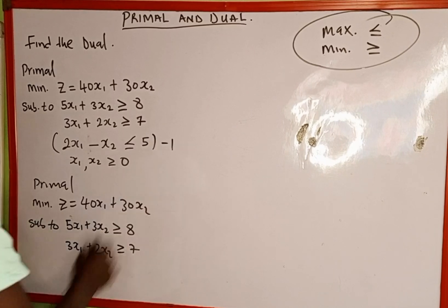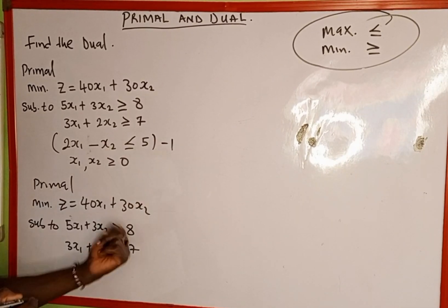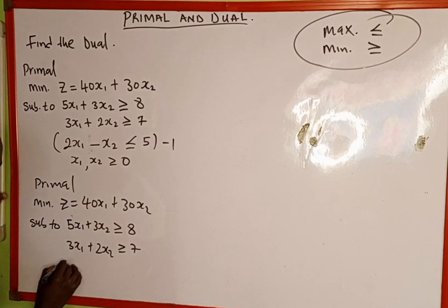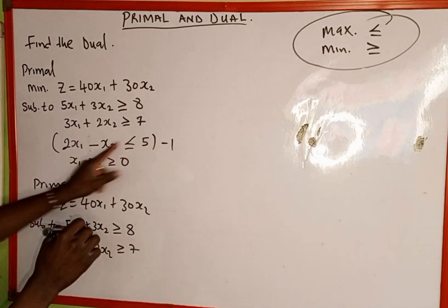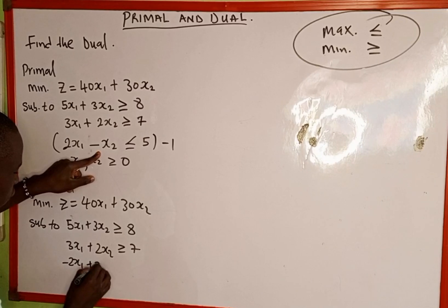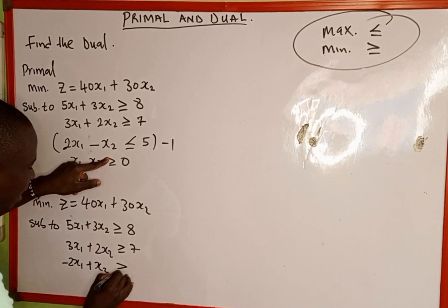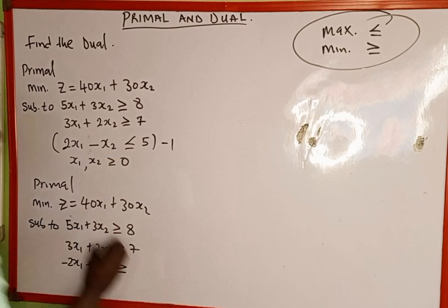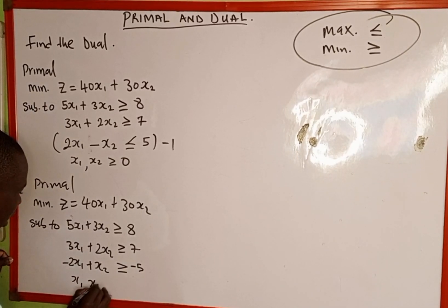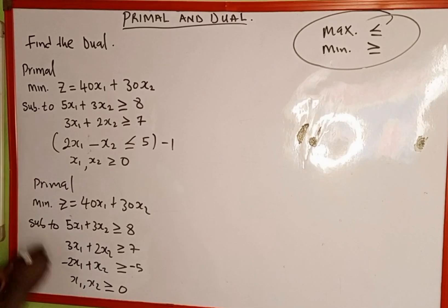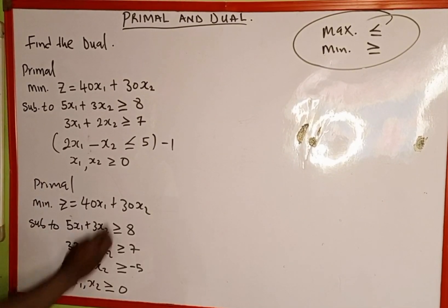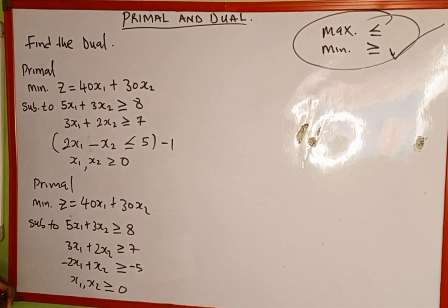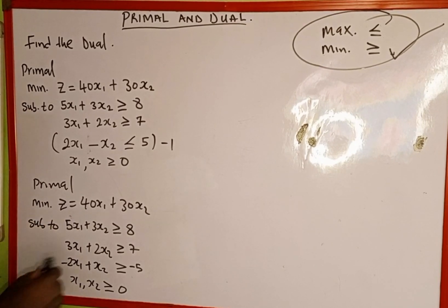So we multiply equation 3 by negative 1. When we do that, we change the inequality from less than to greater than. Negative 1 multiplied by 2x1 gives us negative 2x1. Negative 1 multiplied by negative x2 gives us positive x2. The inequality changes to greater than or equal to, and negative 1 multiplied by 5 gives us negative 5. So now all inequalities are greater than or equal to, satisfying the minimization condition, and we can go ahead and find the duality.